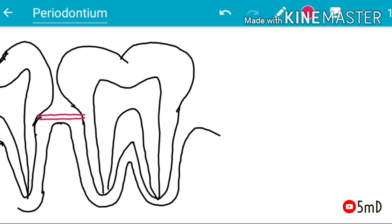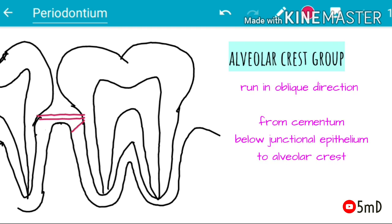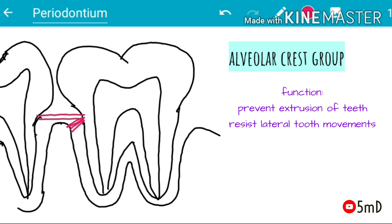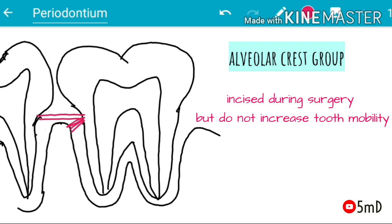The second group is the alveolar crest group of fibers. They run in an oblique direction from the cementum below the junctional epithelium to the alveolar crest. Their main function is prevention of extrusion of the teeth and resistance to lateral tooth movements. These fibers are incised during periodontal surgery but may not increase tooth mobility when there is no significant clinical attachment loss.